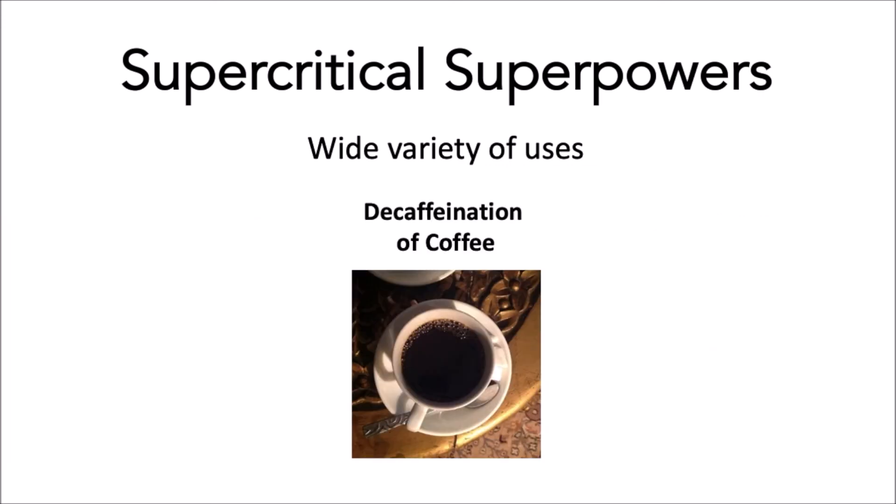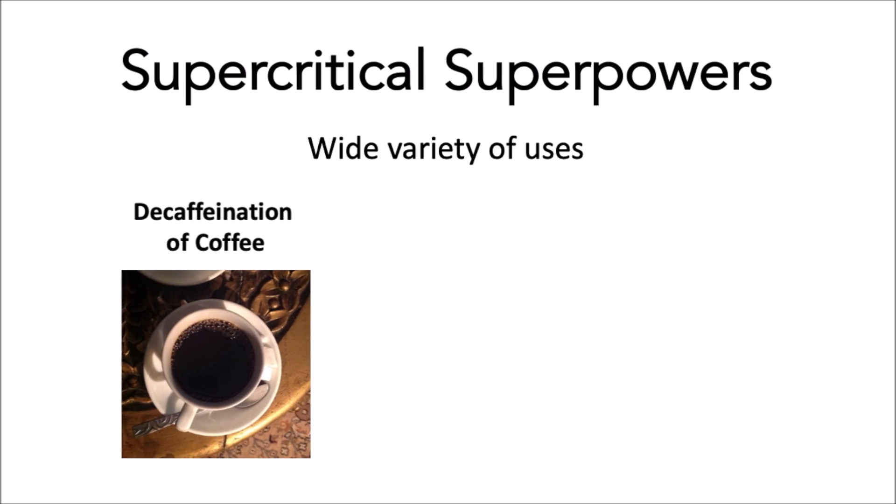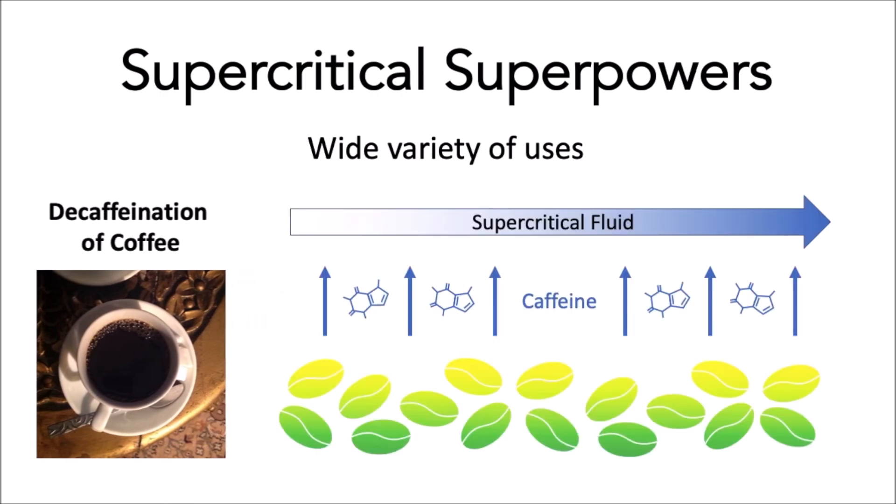One of the most relatable things supercritical fluids is used for is taking the caffeine out of coffee to make decaf coffee. This works by flowing supercritical fluids over unroasted coffee beans, which pulls the caffeine out and leaves all the other compounds that make the coffee taste like coffee.